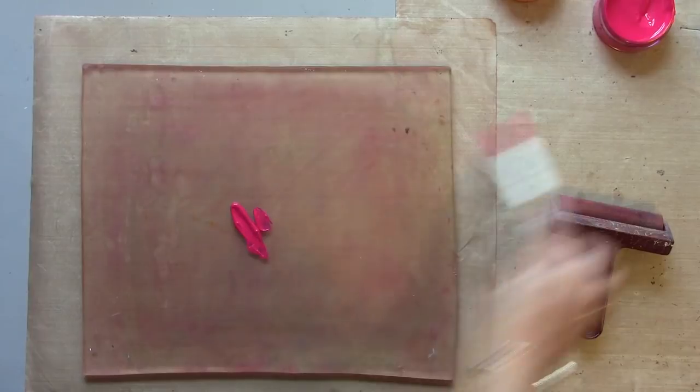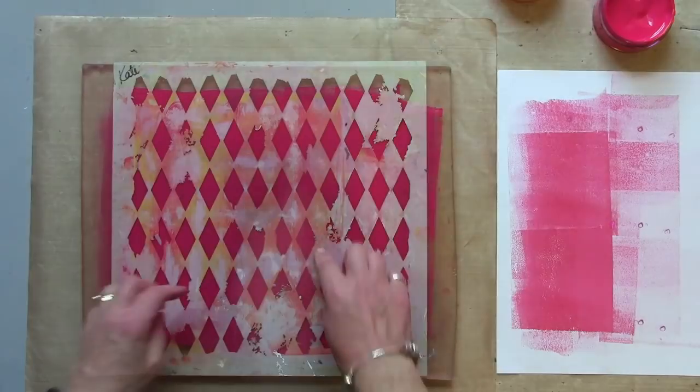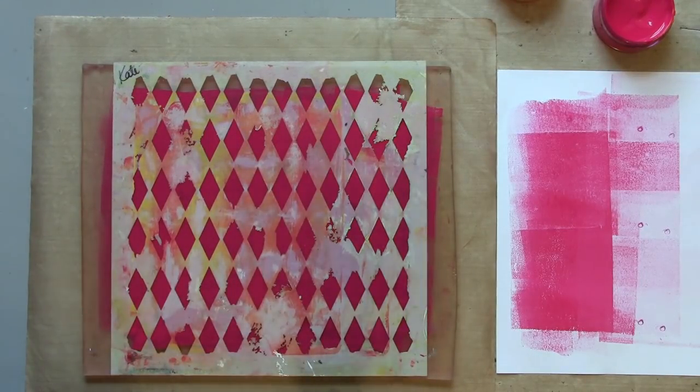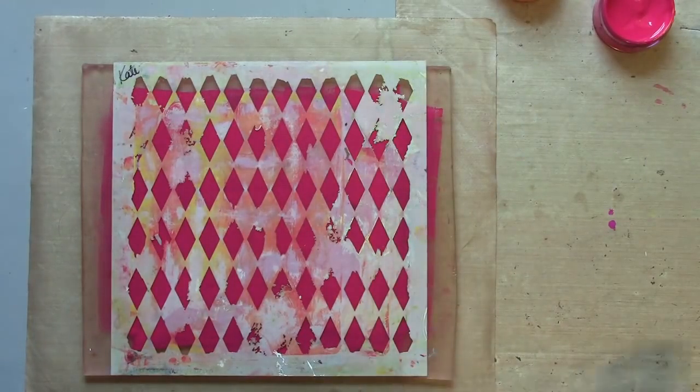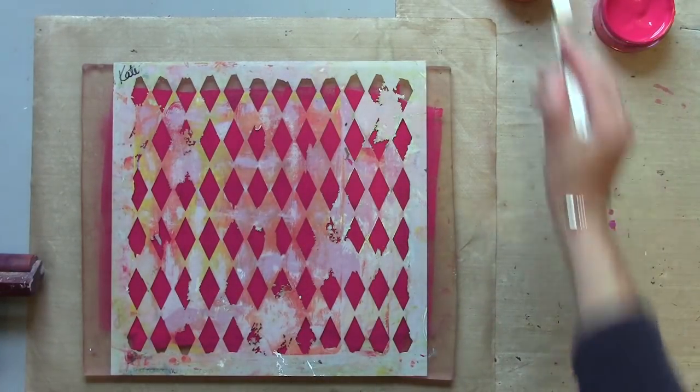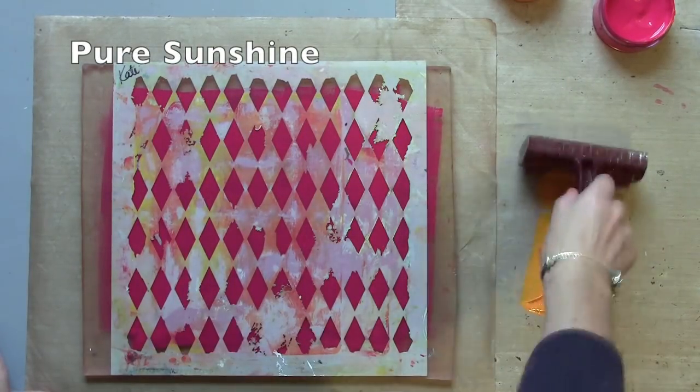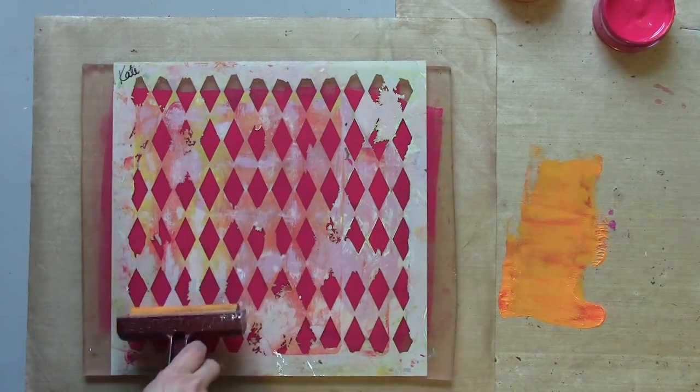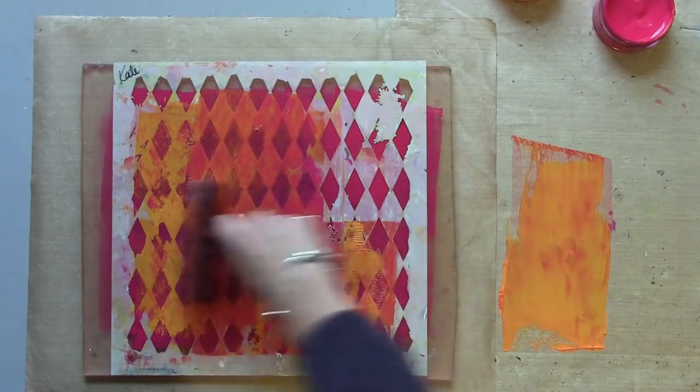I'm starting with Cherry Pie. Now I've placed my stencil on there, I'm going to leave that on there and I'm going to add some pure sunshine. Now this will do two things, it's going to do a stencil lift on the Cherry Pie but it's also going to put a pattern through this harlequin that I've picked out.